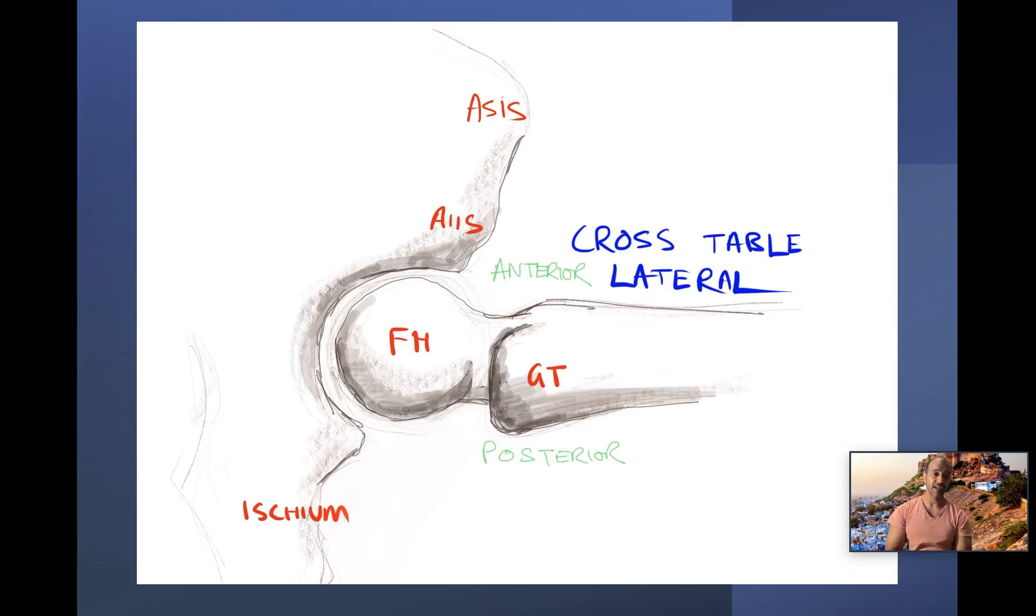Therefore, my aim is to get the femoral head, neck and shaft all lining up like this on a lateral view. And I know where anterior is because the anterior inferior iliac spine indicates and the ischium is posterior. It's much like an iliac oblique view of the pelvis.